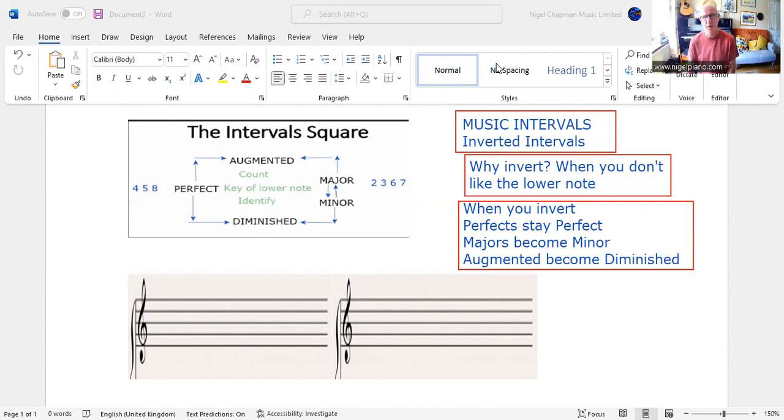There are three steps in the process. So if we took an interval that has F sharp to D, first of all I don't like it so I'm going to invert it. Step one: we don't like that lower note.